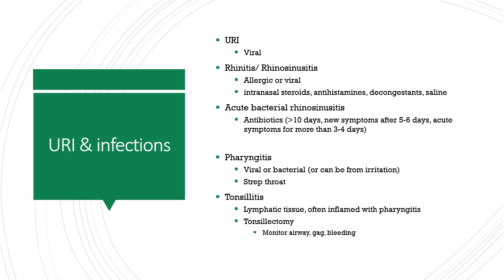Pharyngitis is a sore throat and tonsillitis is inflamed tonsils — these often go hand in hand and can be viral, bacterial, or from irritation. The worst case scenario is strep throat or some sort of abscess, so we always like to culture these to make sure it's not strep. We're pretty aggressive in treating these because strep throat can cause rheumatic fever and rheumatic heart disease. There is a trend shifting away from such aggressive antibiotic treatment of strep pharyngitis — that practice is kind of changing.